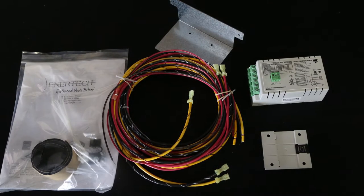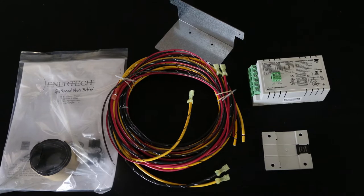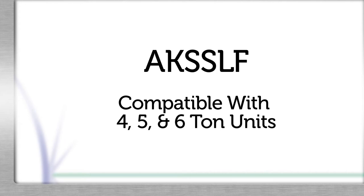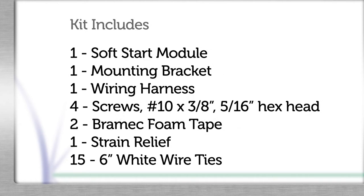There are two SoftStar kits based on the tonnage of unit. The part numbers of the YT kits are AKSSSF which is compatible with the 2 and 3 ton units and AKSSLF which is compatible with the 4, 5 and 6 ton units. Here are the components of the kit.